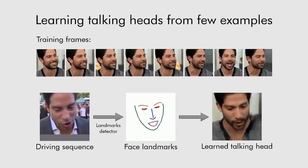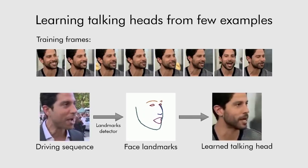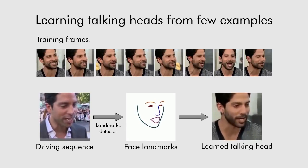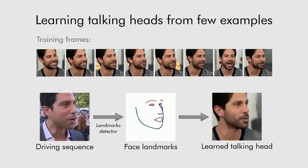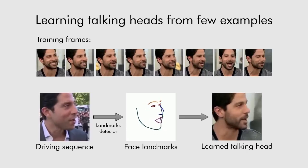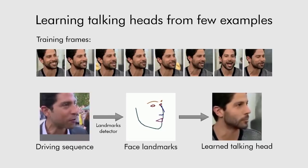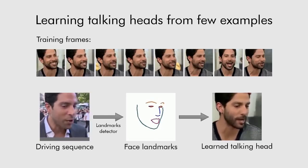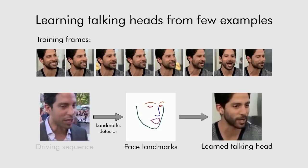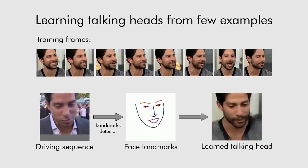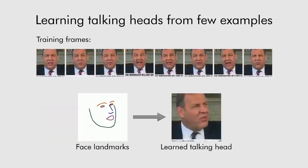We present a system that can learn realistic talking head models. Notably, learning of a new head model requires just a handful of images. In this example, the model was learned from eight frames. Once a talking head model is learned, it can be driven by the positions of face landmarks. In this case, we extract landmarks by running an off-the-shelf face landmark tracker on a different video of the same person. Effectively, the learned model serves as a realistic avatar of a person. Our talking head models work well even for new view angles not present in the training examples.